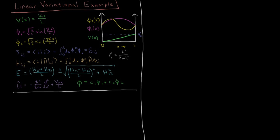In this video we're going to look at the particle in a slanted box model system as an example of how to use the linear variational method. The particle in a slanted box is very similar to the particle in a box, except inside the box the potential energy is not going to be zero all the way across — it's going to be this linear function in green, V0x over L. So we start at V equals zero at x equals zero, and gradually slope all the way up to V equals V0 at x equals L.